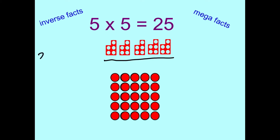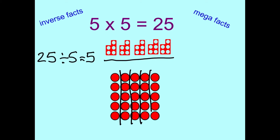You can still divide it by 5. So 25 divided into 5s equals 5. If we do that on the array you can see that there are 5 fives altogether. If we make it a bit bigger, let's do 5 times 50. So if you had 5 fifties that would be 250 — you've still got the 25, you've just added a zero.